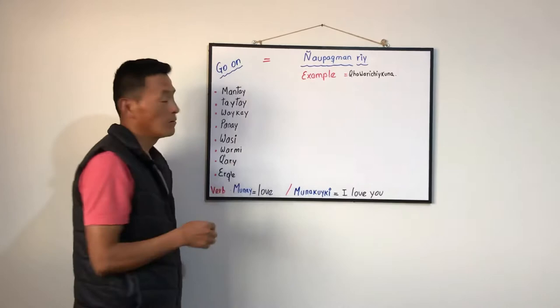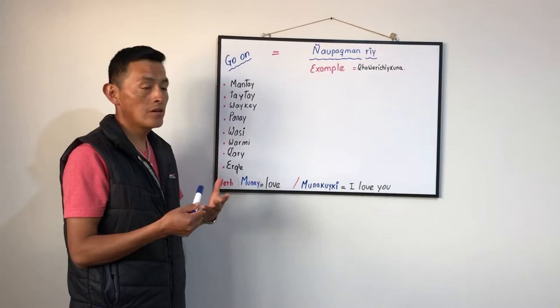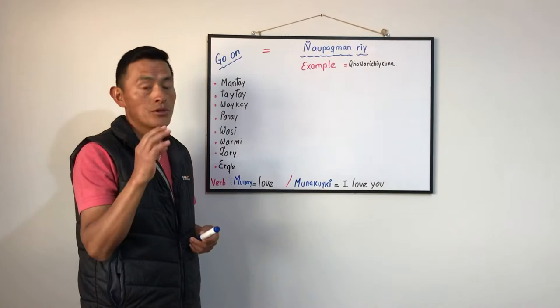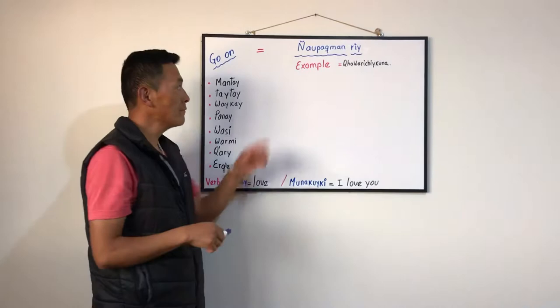I already wrote here some Quechua words. For example, how do you say 'go on' in Quechua? Nyaupajmanri. You have to pronounce these words very well. Nyaupajmanri.